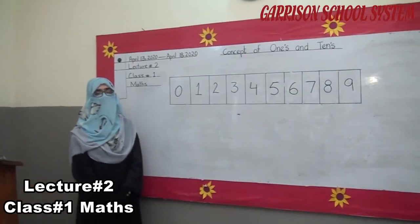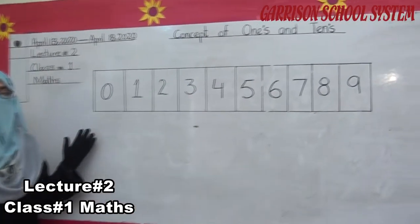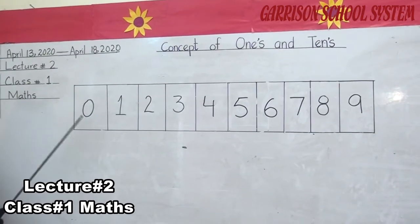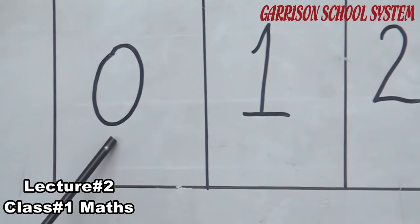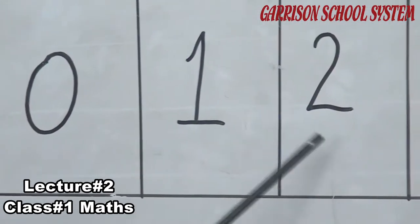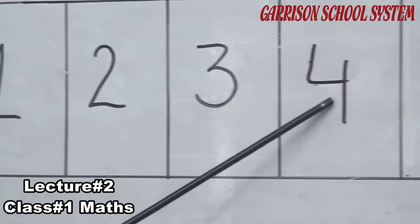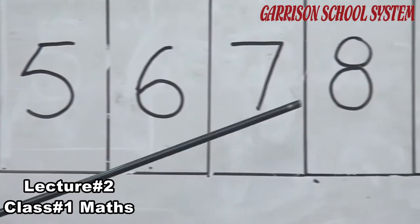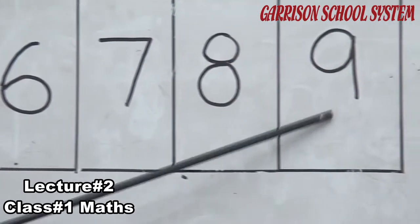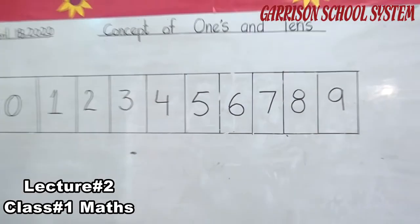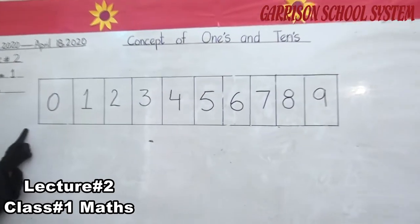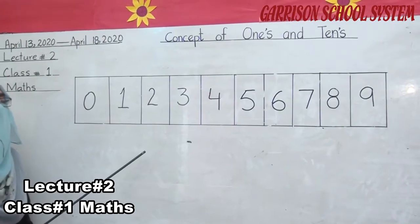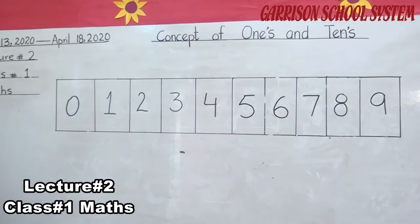Okay students, look at the board. Here are some numbers I write on the board. Count with me, read with me: 0, 1, 2, 3, 4, 5, 6, 7, 8, 9. How many are these numbers? 0 to 9. These are single numbers. No other number is on their left or right side. So these are called ones. What do we call them? Ones.